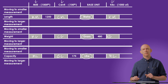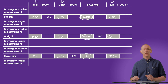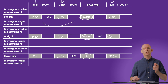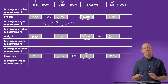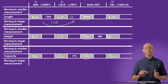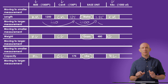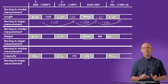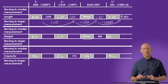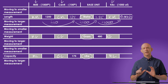We already have one measurement here for length: 1250 millimeters. Let's convert this into centimeters by dividing by 10, because there are 10 millimeters in a centimeter. We can then convert into meters by dividing by 100 to get 1.25, because there are 100 centimeters in a meter. Converting into kilometers means dividing by 1000 because there are 1000 meters in a kilometer, giving us 0.00125 kilometers.